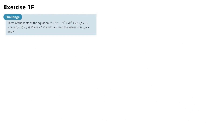Our next question is from exercise 1f. Three of the roots of the equation z to the power 5 plus bz to the power 4 plus cz cubed plus dz squared plus ez plus f equals 0, where b, c, d, e and f are real numbers, are minus 2, 2i and 1 plus i. We're asked to find the values of the coefficients b, c, d, e and f. Since 2i and 1 plus i are roots, their complex conjugates minus 2i and 1 minus i are also roots, giving us all five roots.